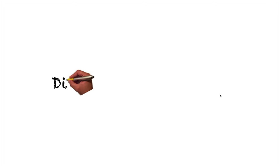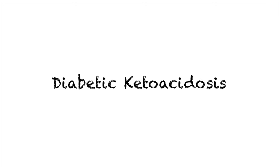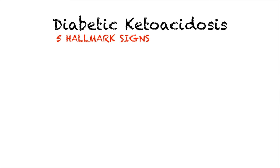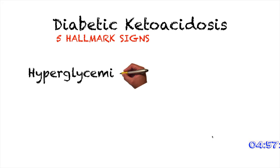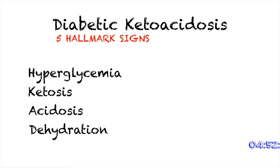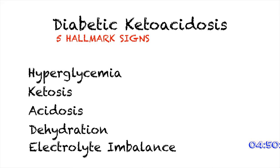Hello guys, welcome to this video. Today we'll talk about diabetic ketoacidosis, or DKA, in 5 minutes. There are 5 hallmark signs that characterize DKA. They are hyperglycemia, ketosis, acidosis, dehydration, and electrolyte imbalance.